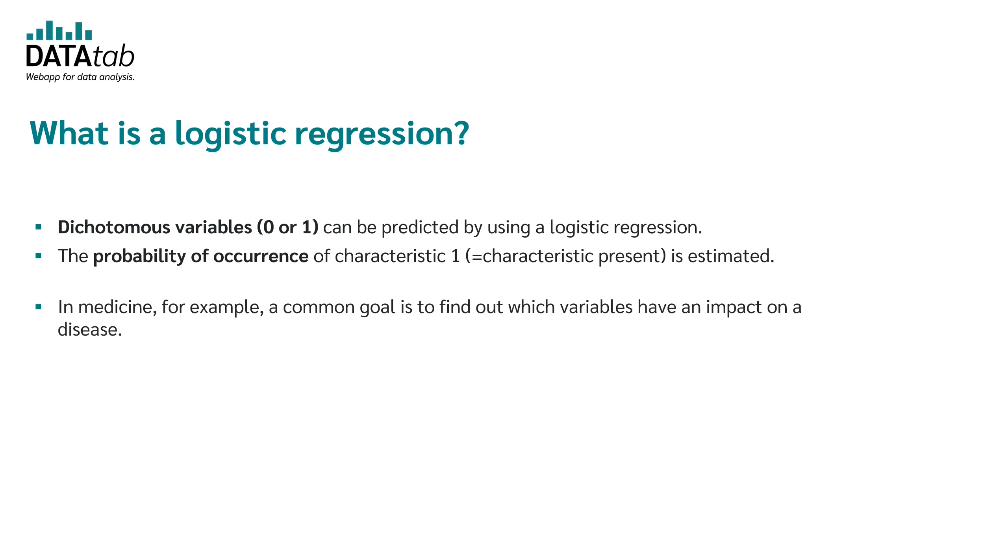Let's look at an example in the field of medicine. Here a common goal is to find out which variables have an impact on a disease. In this case 0 could stand for not diseased and 1 would be diseased. And the influence of age, gender, smoking status and behaviors on the particular disease could be examined.